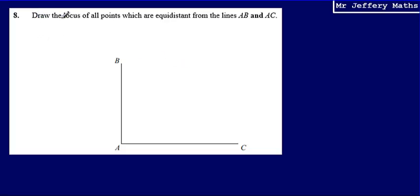This is question 8. Here I'm asked to draw the locus of all points which are equidistant from the lines AB and AC.